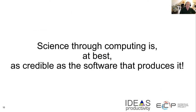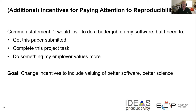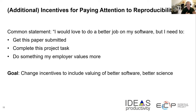We come back fundamentally to this point: science through computing is at best as credible as the software that produces it. So we want to worry about the credibility of the software, and we're starting to get more and more reasons to pay attention to reproducibility. We've all heard or even made a statement like, I'd love to do a better job on my software, but I need to get this paper submitted, or I need to complete this other task. What we need to do is change the incentives to value better software to help promote the better science that results.